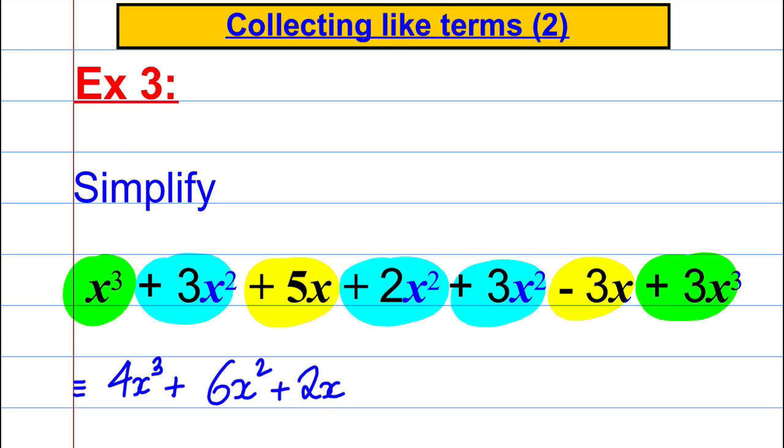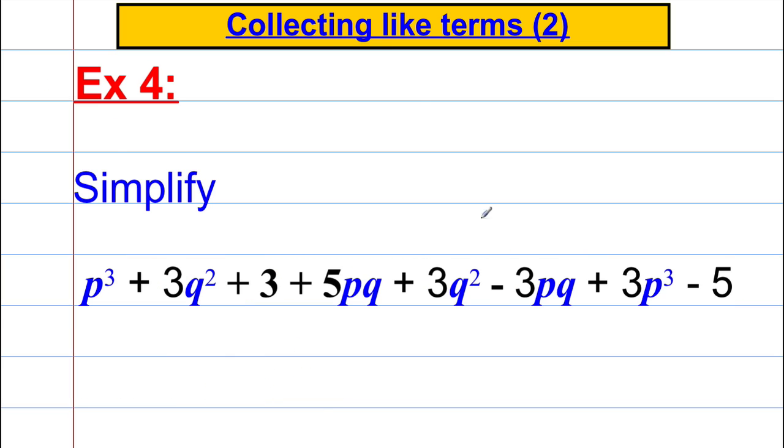Another one here. So we've got a mixture here of actually p cubes, q squared, and p cubes, and actually we've got some numbers thrown in. So there's one, two, three, four different things going on here. So let's highlight those four different things. Firstly we've got p cubes: one of them there and three of them here. Then we've got ourselves q squared, so we've got three of them there, another three of them there.